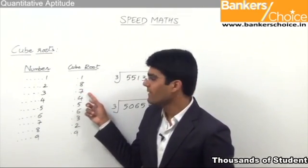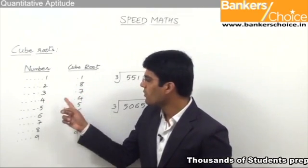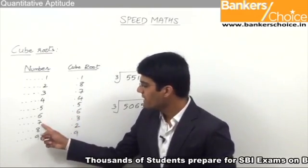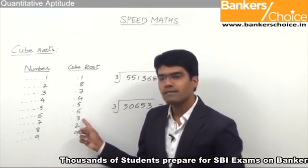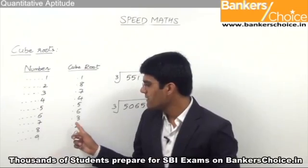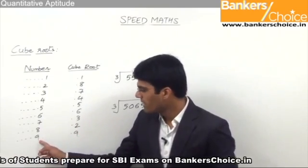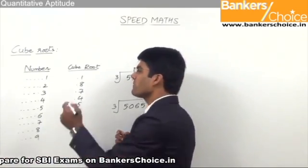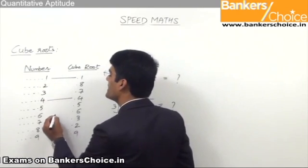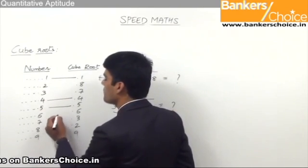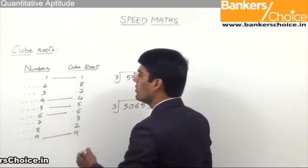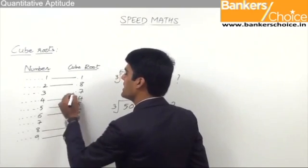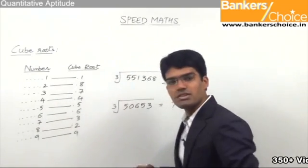When a number ends with 3, the cube root ends with 7. For 4, it is 4; for 5, it is 5; for 6, it is 6. For 7, we get the answer ending with 3. When a number ends with 8, the cube root ends with 2. When a number ends with 9, the cube root ends with 9. So as you can see, for most digits — 1, 4, 5, 6, and 9 — the unit digit remains the same. Only for 2 and 8, and for 3 and 7, the digits get interchanged.